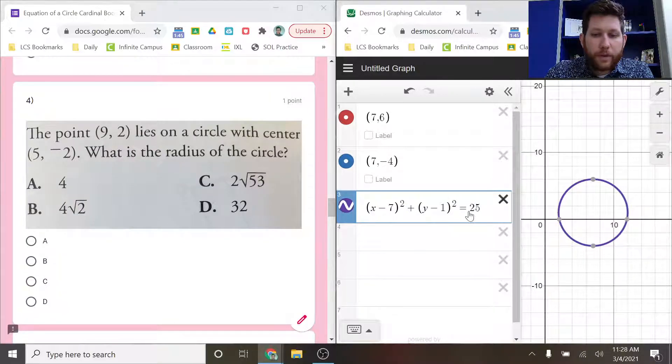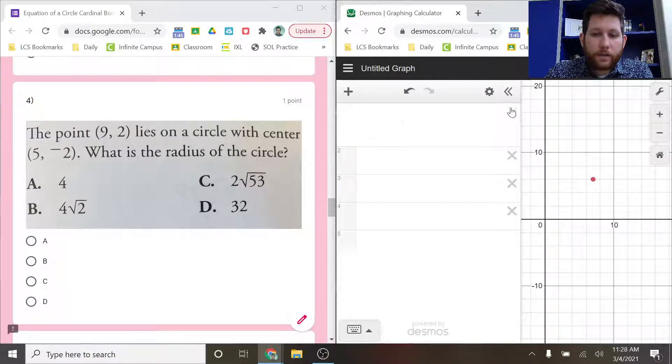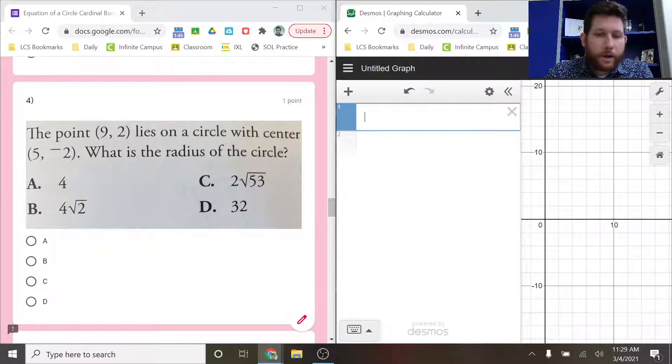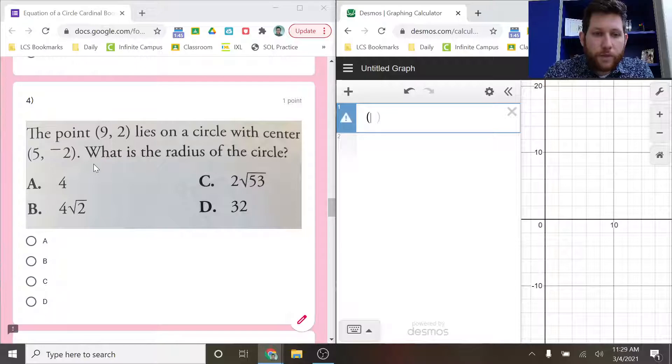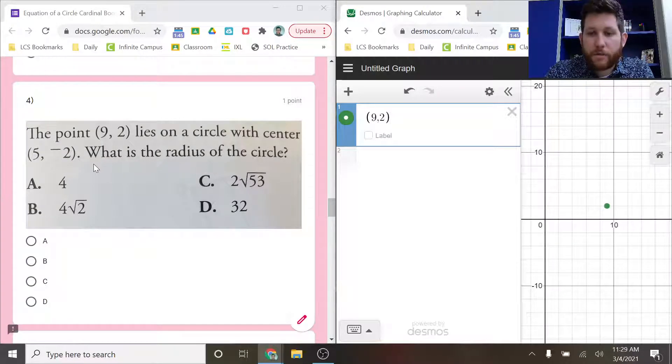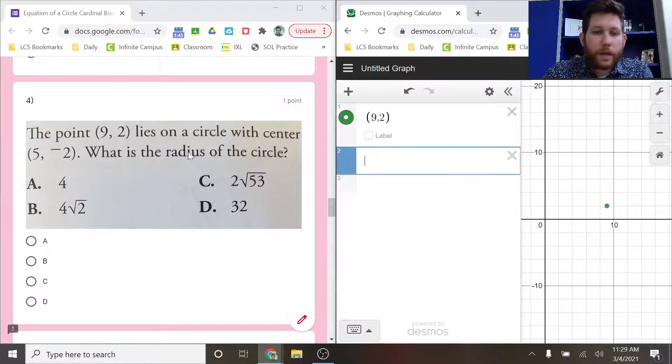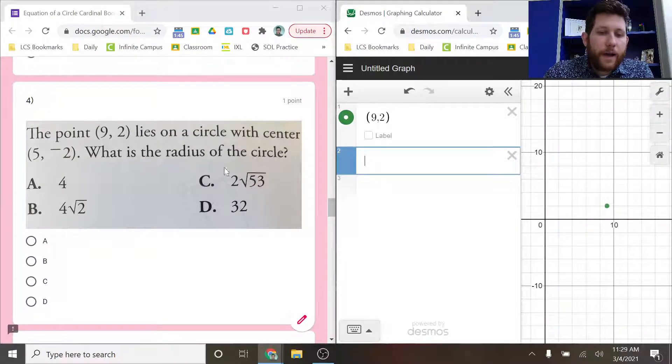All right, number four. Number four would be a pretty difficult problem on its own. Let me kind of clear out here. The point (9,2) lies on the circle with a center of (5,-2). So (9,2) is on my circle somewhere, right? So there's my (9,2). Then it also says that (5,-2) is my center.